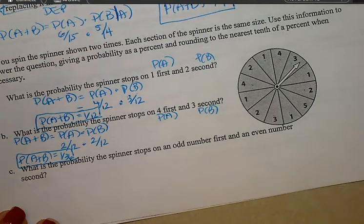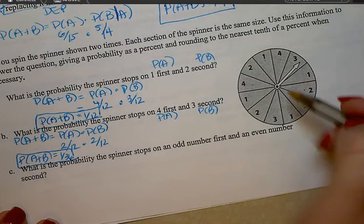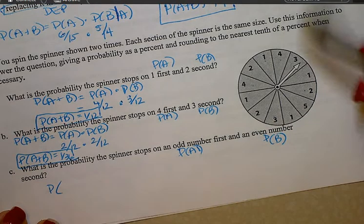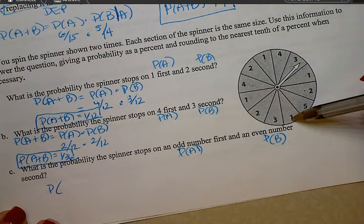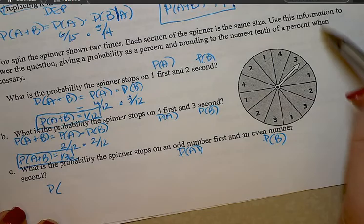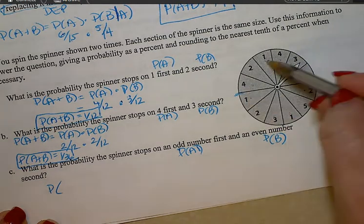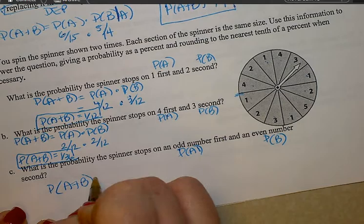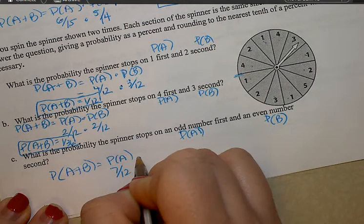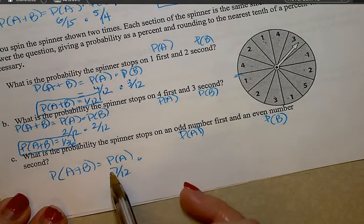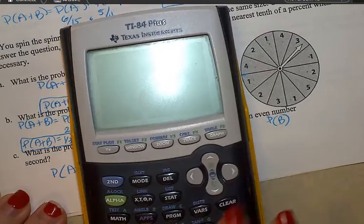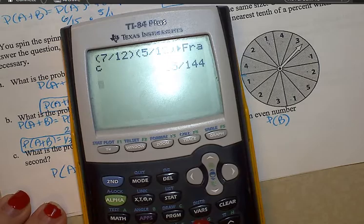What's the probability that the spinner stops at an odd number first and stops at an even number second? Counting the odds: there are 7 odds out of 12. And for even second — if there are 7 odds, that leaves 5 evens. Multiply and reduce: 35 over 144.